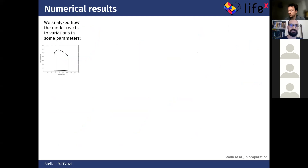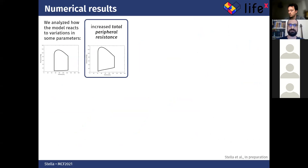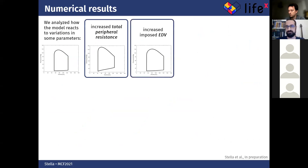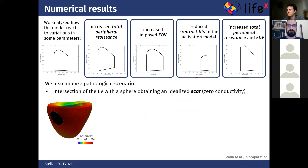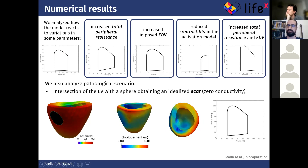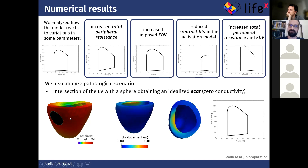We then varied some parameters to see how the model reacts to different scenarios. For example, we increased the total peripheral resistance and observed an increase in PV loop area. We also increased the end-diastolic volume, reduced contractility in the activation model, or combined increased total peripheral resistance with increased end-diastolic volume. We also investigated a pathological scenario including an idealized scar — a portion of the left ventricle with zero conductivity, represented as a sphere intersected with the left ventricle — and found the model reproduces a good PV loop even in this case.